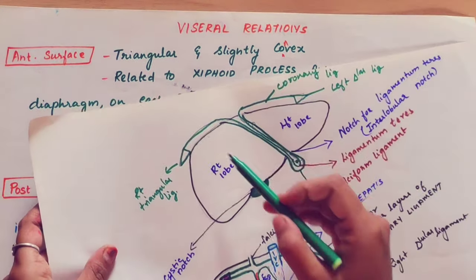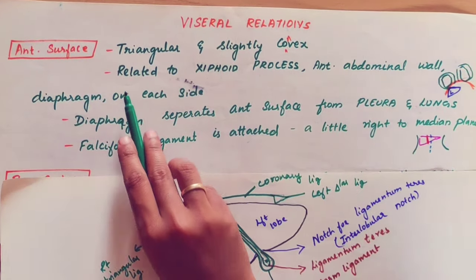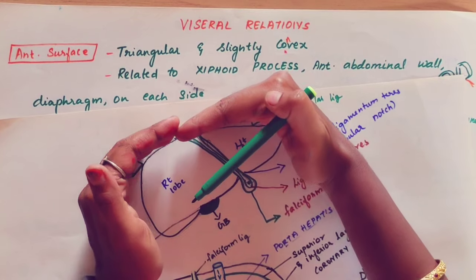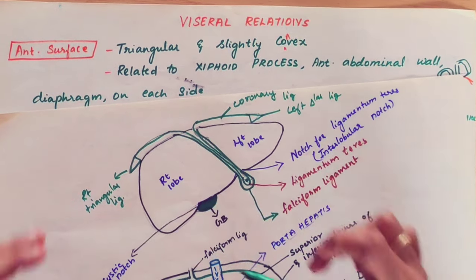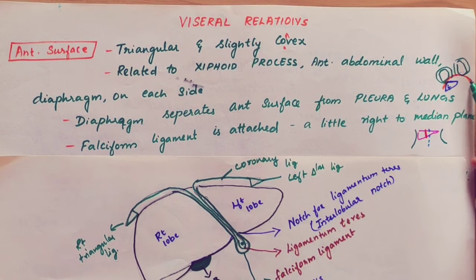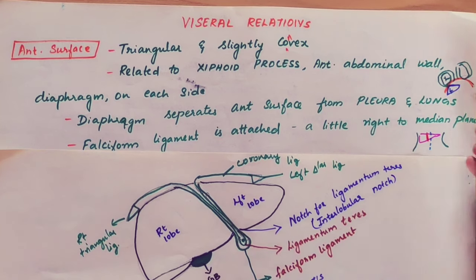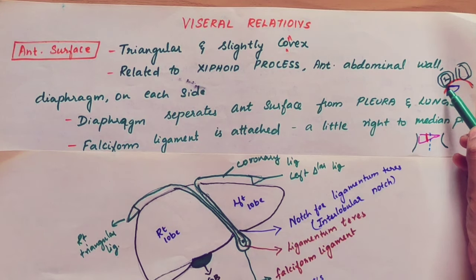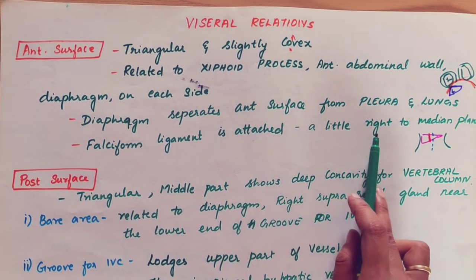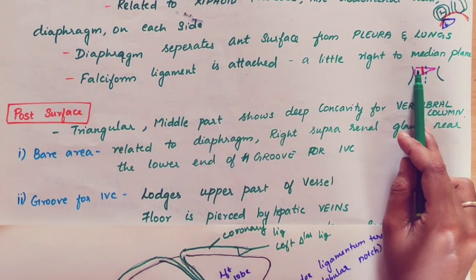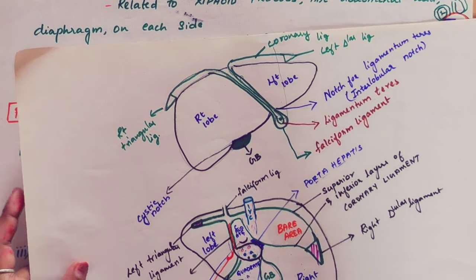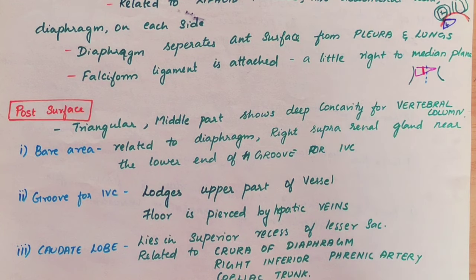To repeat: the anterior surface of the liver is triangular and slightly convex. It is related to the xiphoid process, anterior abdominal wall, and diaphragm on each side. The diaphragm is dome-shaped and separates the anterior surface from the pleura and lungs. The falciform ligament is attached slightly to the right of the median plane.